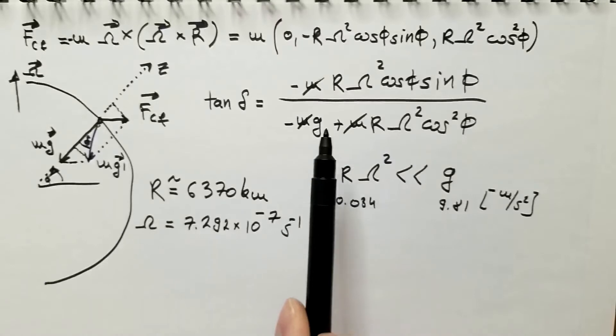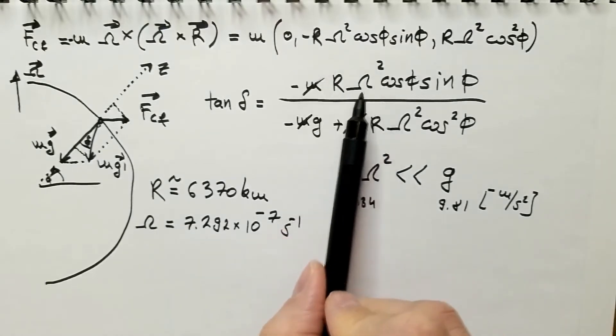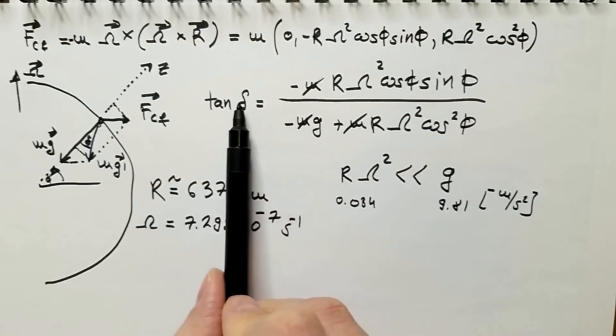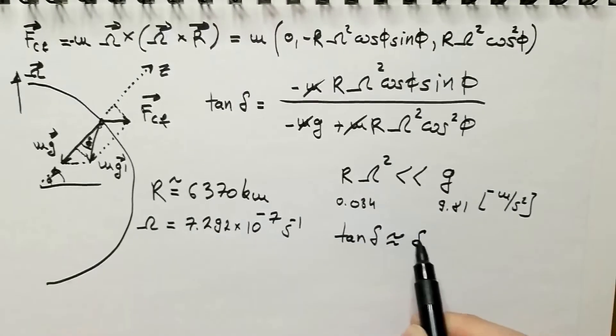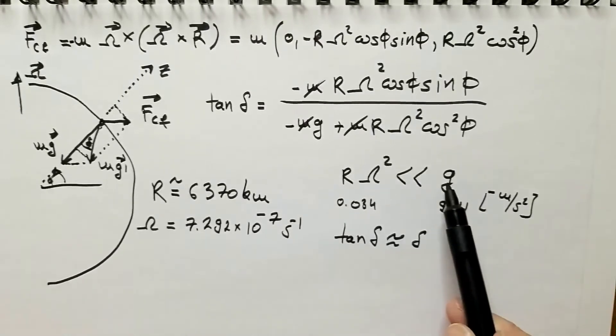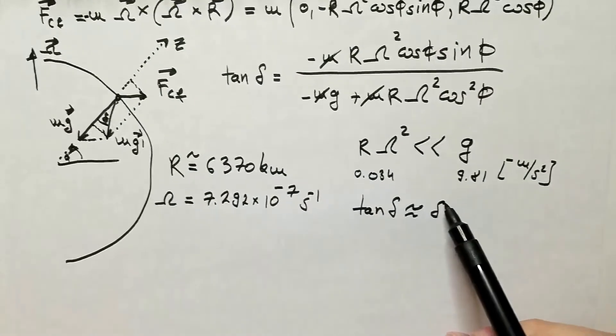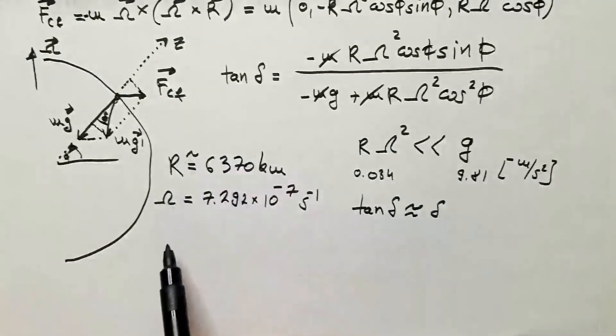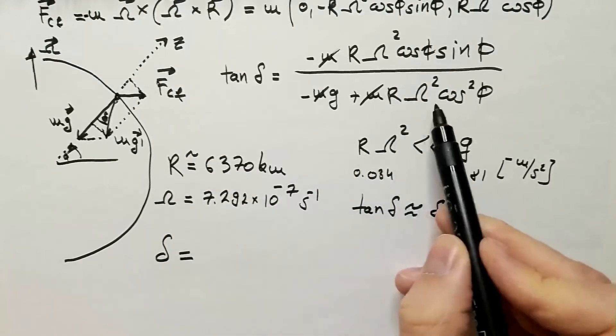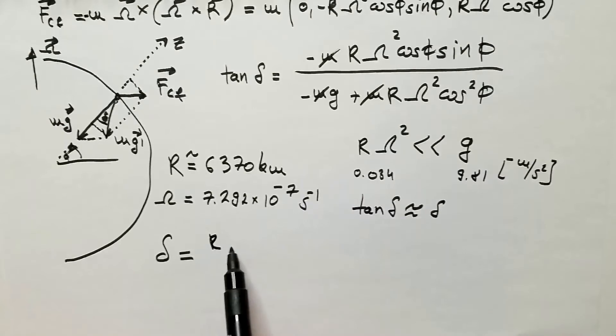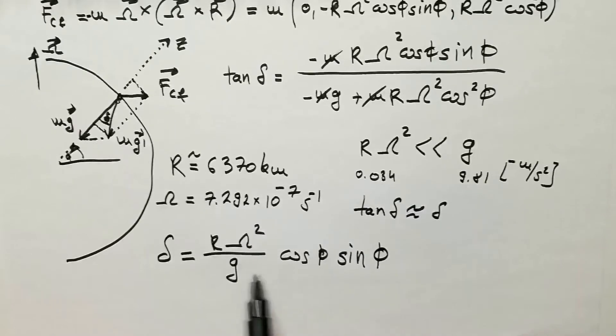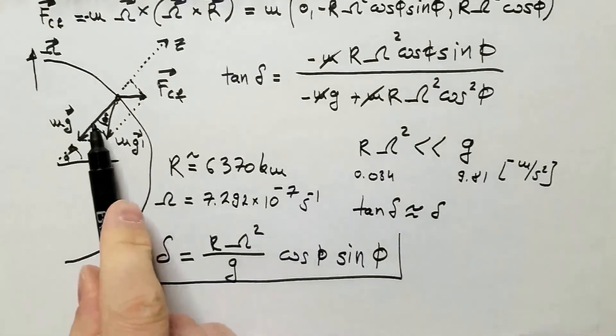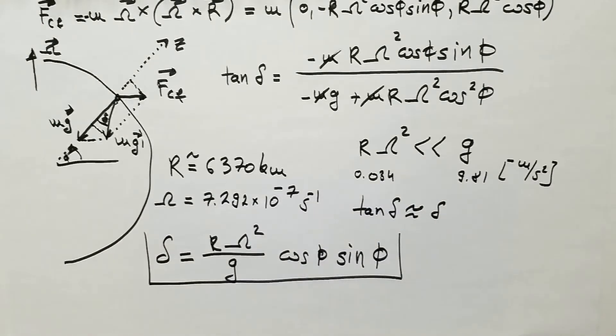This also further means that this denominator will be much smaller than denominator, and therefore delta will be very small angle. And we know that tangent for small angles is approximately equal to that angle. So, if I adopt these two approximations, then I can write that instead of tangent delta, I have delta equals, and now I don't have this term anymore, so I will have r omega squared divided by g times cosine phi times sine phi. And this is expression for the deviation angle delta with these assumptions that we adopted here.